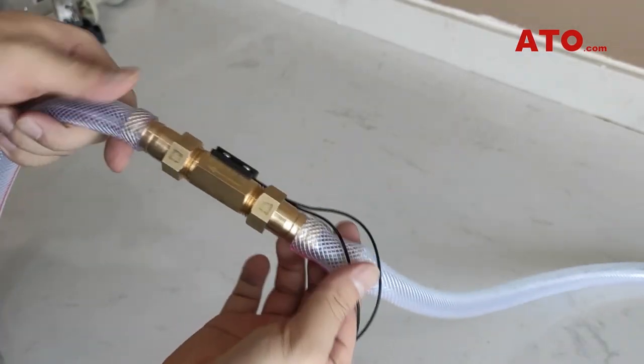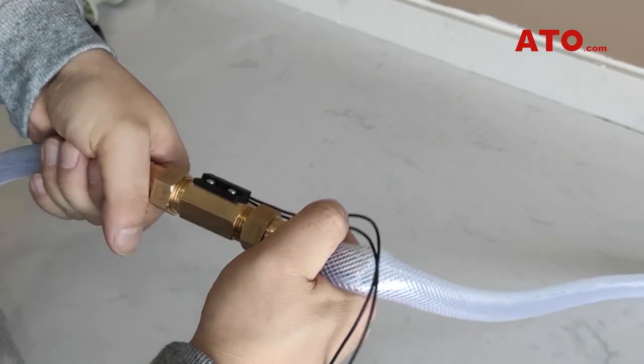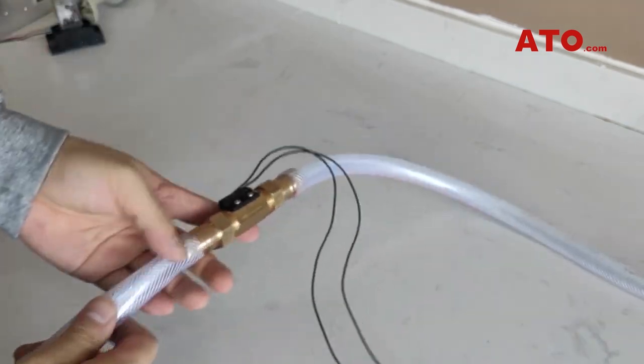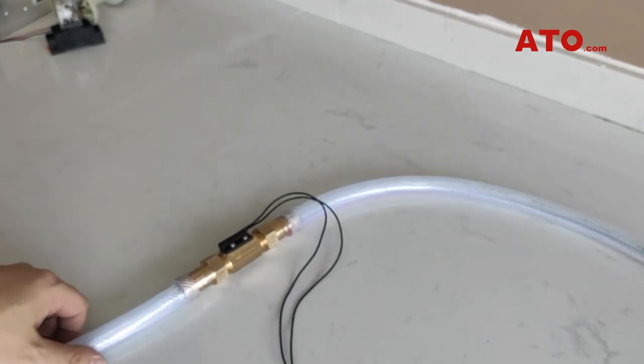With the water pipe part done, we can join together the magnetic water flow switch and other necessary components according to the control circuit diagram.